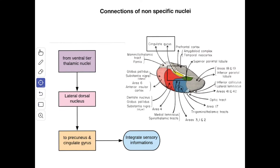Next we'll see the connections of the lateral dorsal nucleus. From the ventral tier thalamic nuclei you get the afferent and they terminate into the lateral dorsal nucleus. From here the efferent goes to the precuneus and cingulate gyrus. The function is it integrates the sensory information.